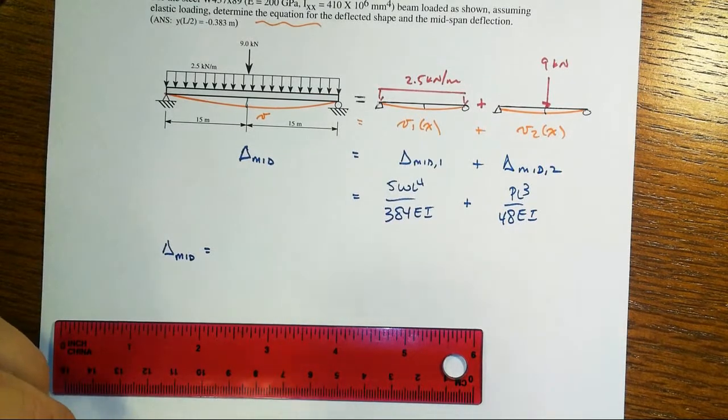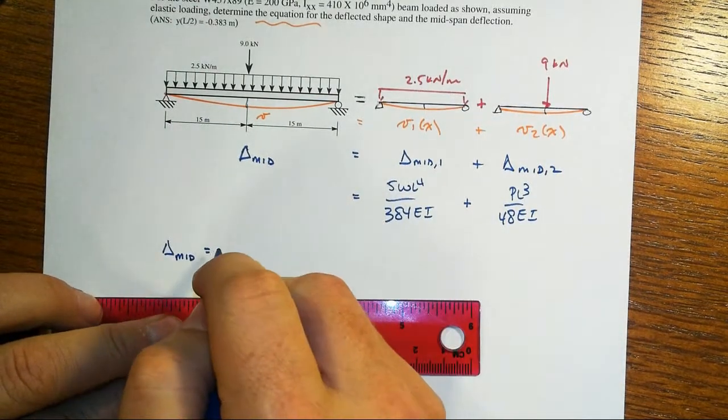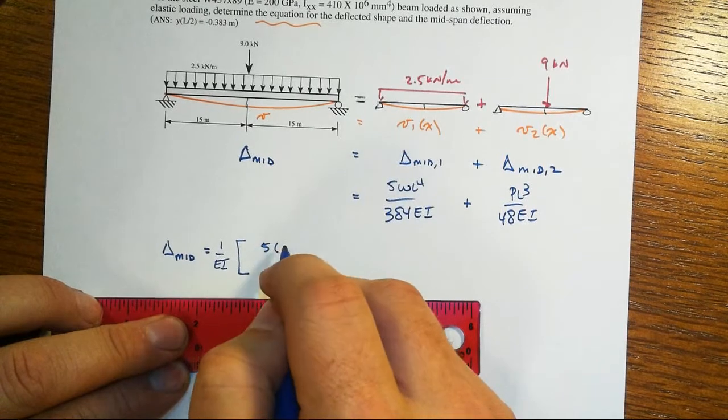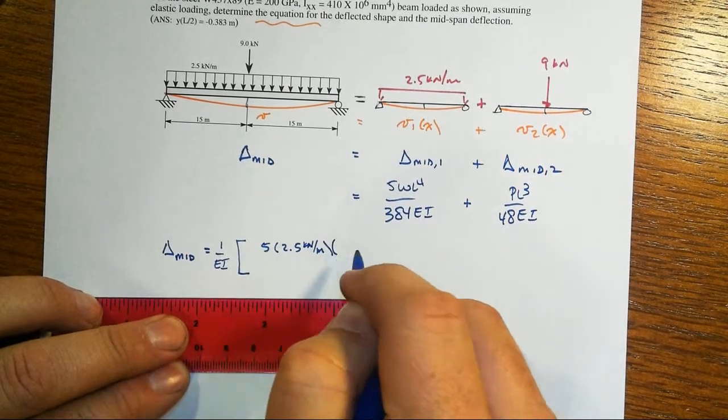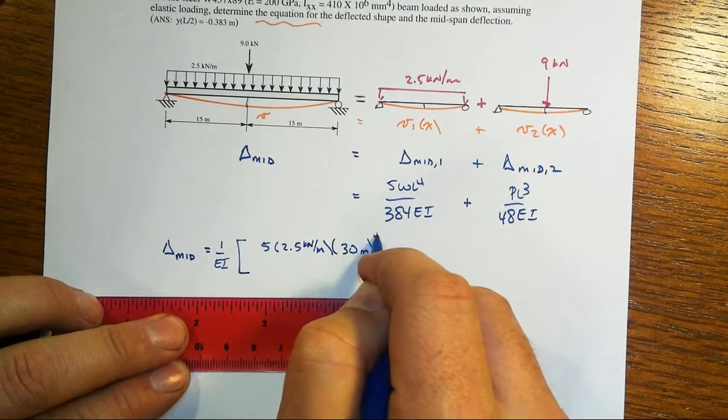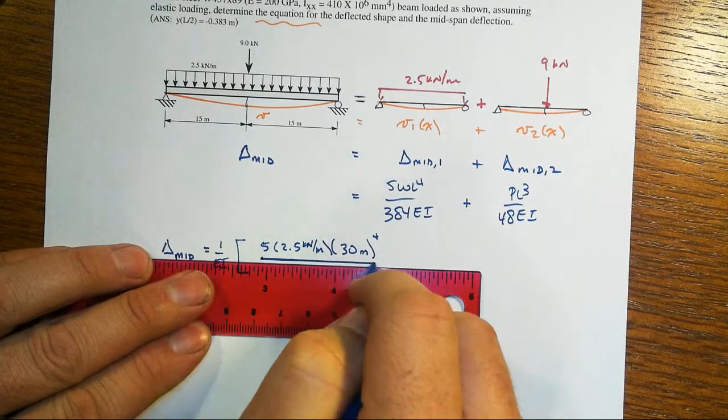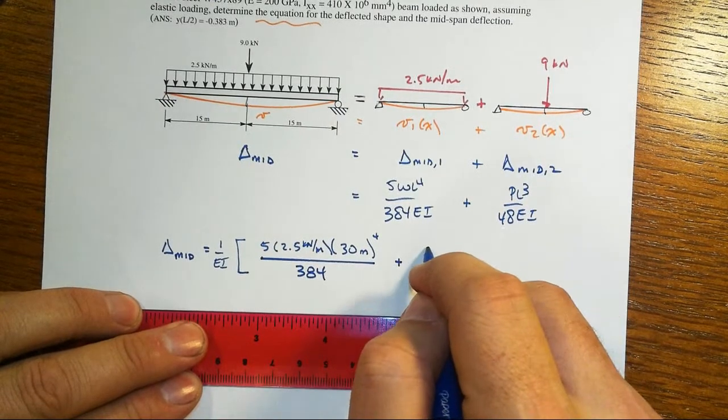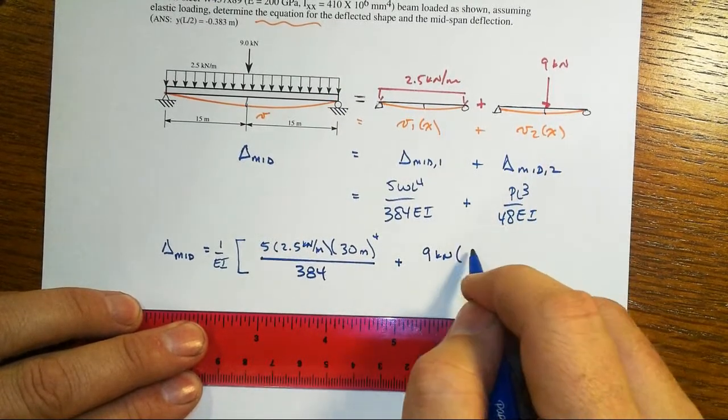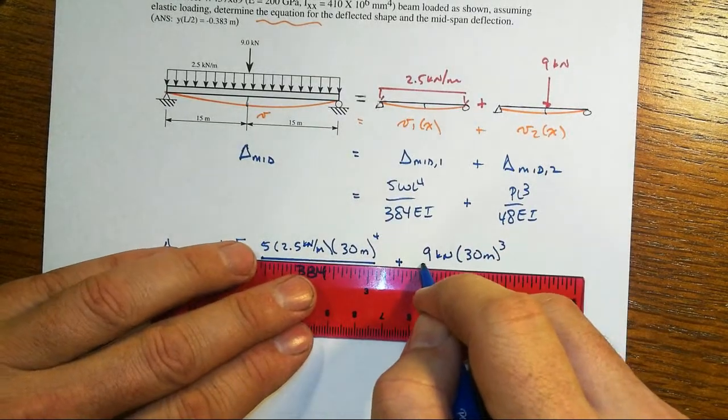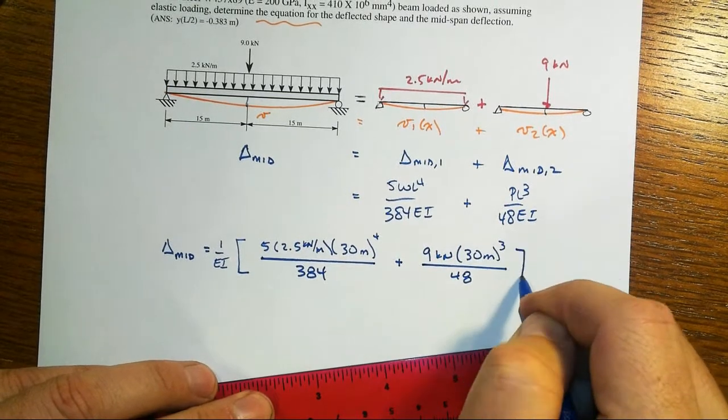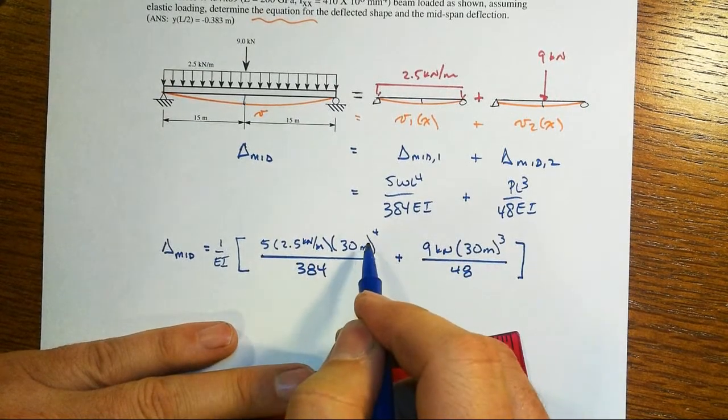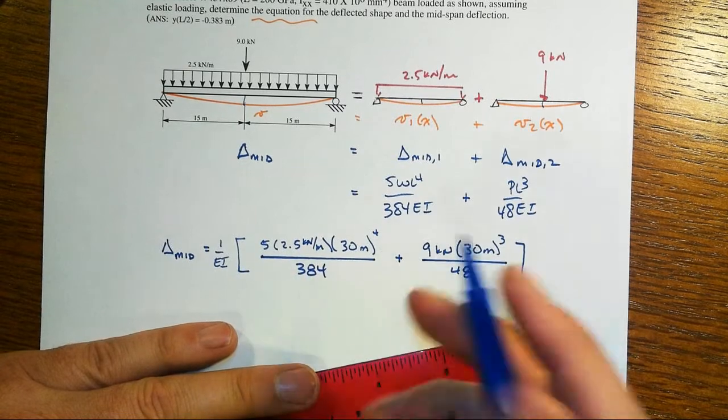That is the answer, but let's get some numbers in here. In this SI system, there's a whole lot of things we need to keep very careful track of. Let's pull out the EI first of all, make this a little bit easier to work with. We get 5 times 2.5 kN per meter times 30 meters. That's a long beam. That's about 100 feet for the beam, divided by 384. Yes, you need to put the units in there. You've got to keep careful track of what is happening here.